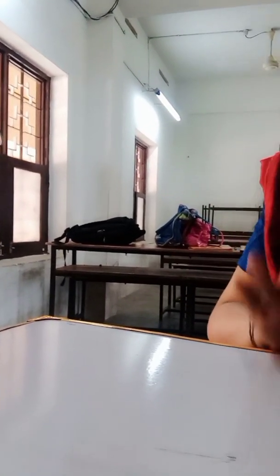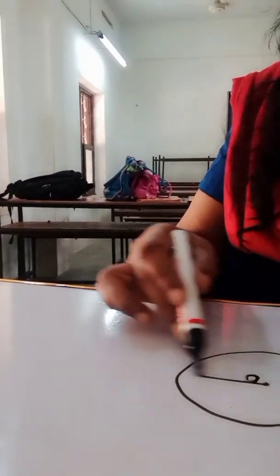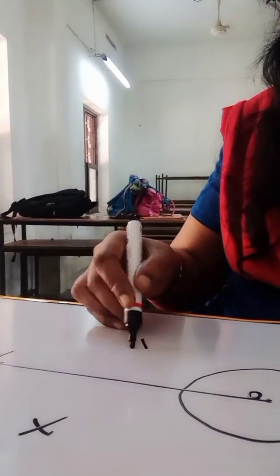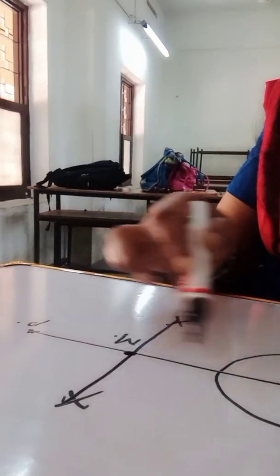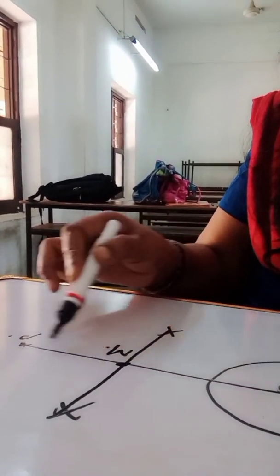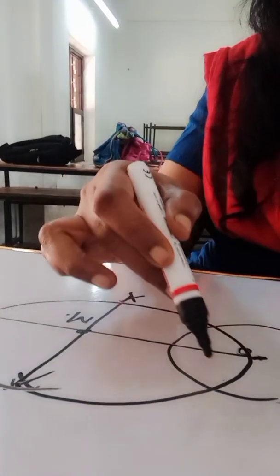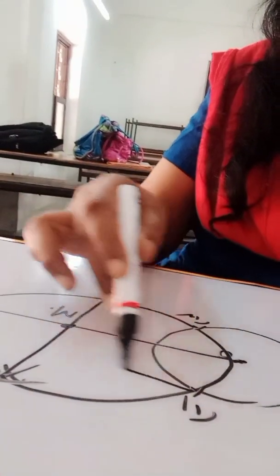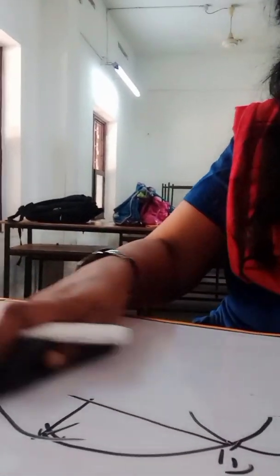For the construction of tangents from an external point: first, draw a circle with the given radius. Then take a point P outside the circle. Join O and P. Take the perpendicular bisector — find its midpoint using construction; call it M. With M as center and OM (or MP) as radius, draw another circle which intersects the first circle at two points T1 and T2. Join PT1 and PT2. These are the required tangents.